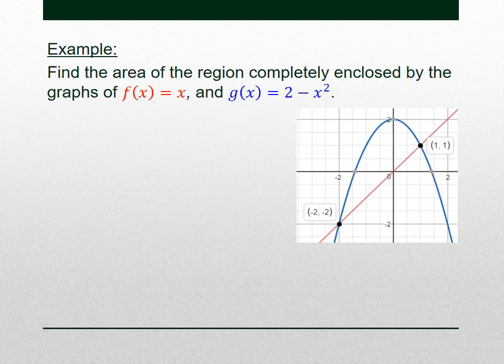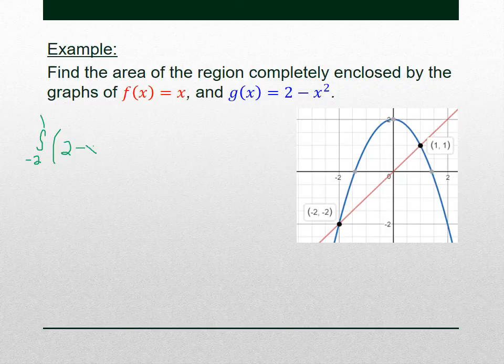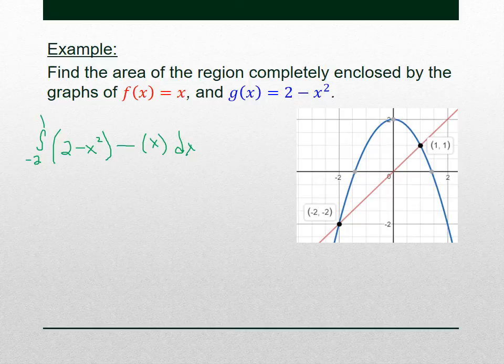The lower bound is −2 and the upper bound is 1, so we take the definite integral from −2 to 1. The blue guy g(x) = 2 − x² is on top, and the red guy f(x) = x is on the bottom. So we integrate g(x) − f(x): the definite integral from −2 to 1 of (2 − x² − x) dx. That definite integral gives us the area of this green region.